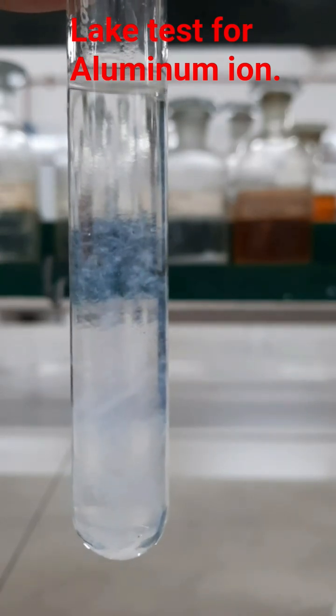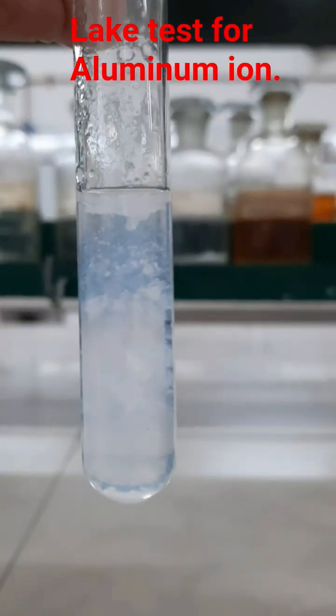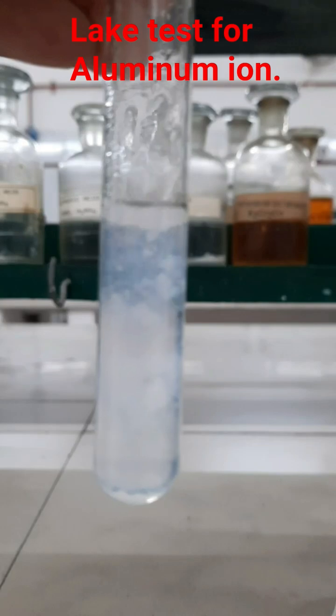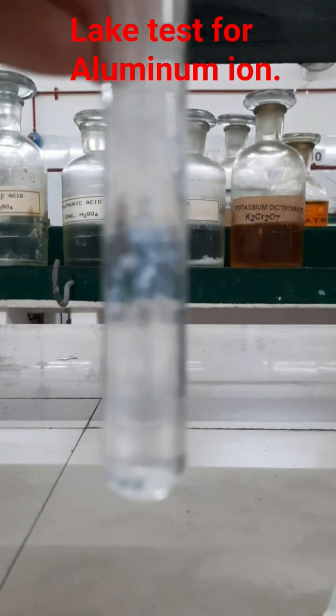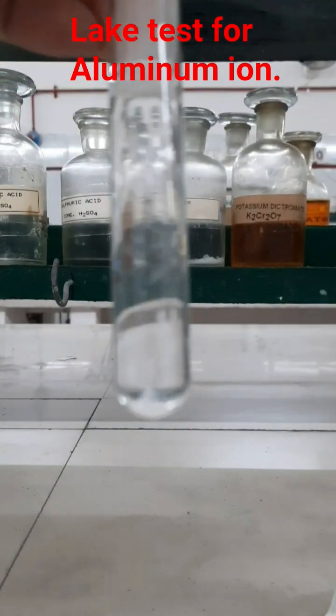Add dilute HCl into the precipitate till the precipitate dissolves completely. After adding this dilute HCl, you can see the precipitate dissolves completely.